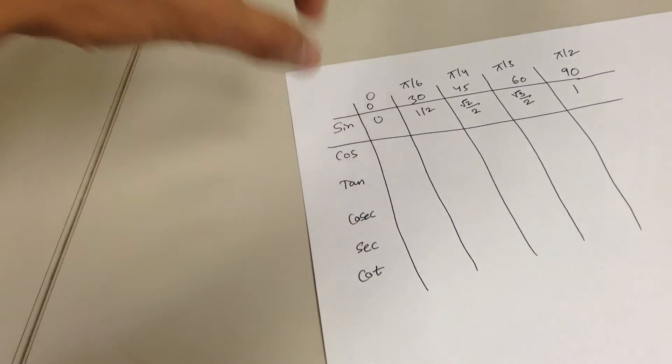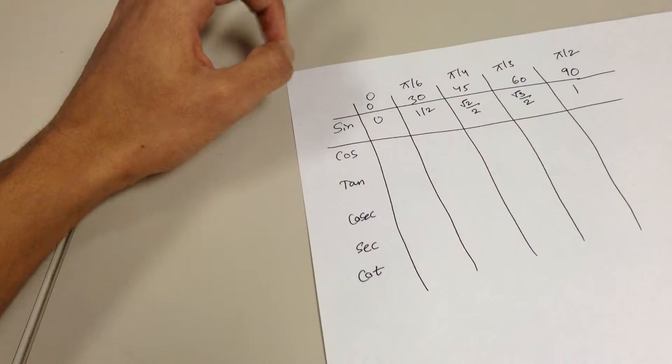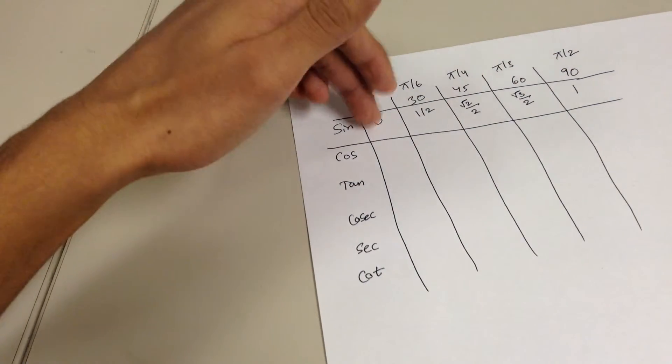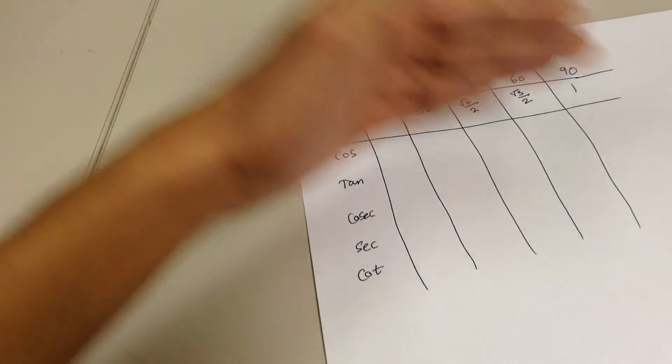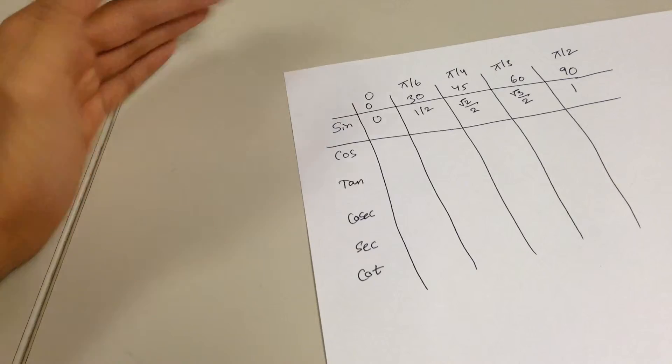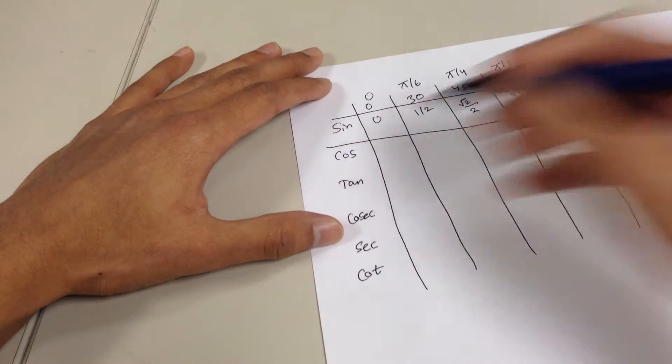Once you have this one set of values memorized, it's pretty easy. Like I told you, it's 0, half, square root of two over two, square root of three over two, and one. So once you have these values down, you can have all the other values in a simple way. I can show you how. Let's move on to cosine now.